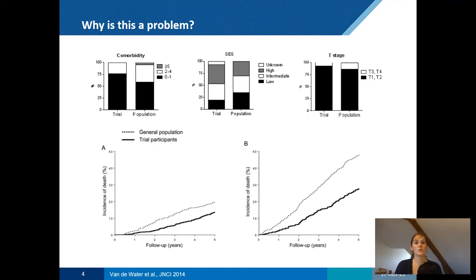You could ask: why is this a problem? If we have evidence for treatments in younger adults, why not simply use that in older populations too, even if they weren't included in trials? The big problem is that patients in trials are different from patients in the real population. This study compared the TEAM trial — an international breast cancer trial in adjuvant endocrine therapy — with a real population based on cancer registry data.